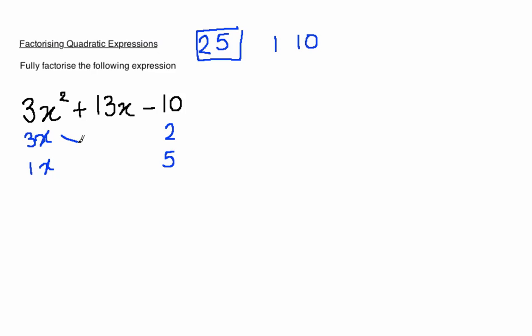The step after this is to cross over and multiply. 3x times 5 is 15x. 1x times 2 is 2x.